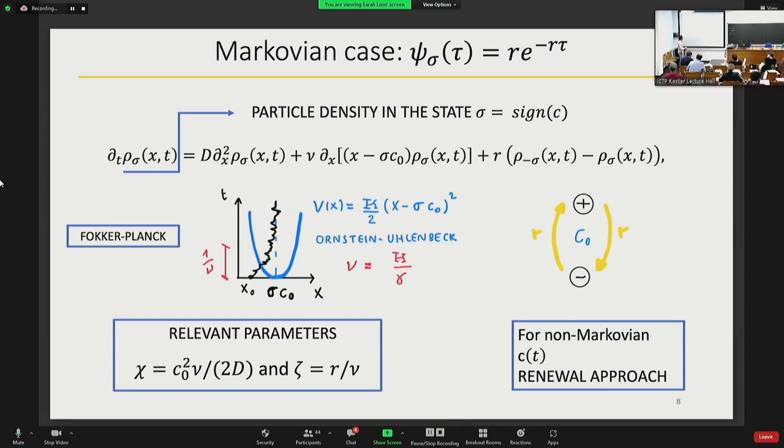This type of equation was already derived in the context of run-and-tumble particles in confining potential. If you want to generalize this procedure to non-Markovian systems, you have to use a renewal approach which is not trivial. If you solve the dynamics and calculate the stationary distribution of this equation, you see that it depends on two parameters: chi, which tells you basically how much the two centers of the potential are distinguishable with respect to thermal fluctuation, and zeta, which is the ratio of the two time scales of the system, namely the relaxation time scale inside the trap and the time between two consecutive switches.